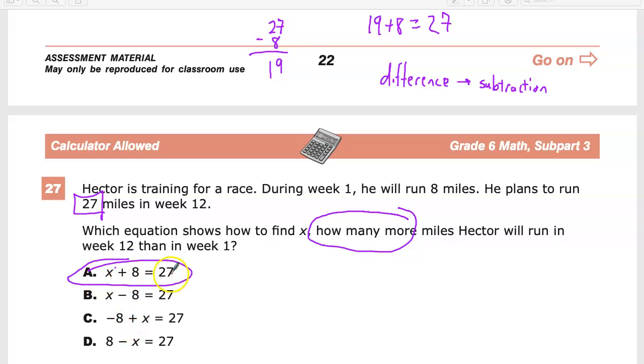Well, if x's value is 19, this looks almost exactly the same: x plus 8 equals 27. So if I want to know how many more miles that will take Hector to run in week 12, I need to do whatever x is, which is 19 more miles than 8, is equal to 27. So that's my answer. My answer to number 27 is A.